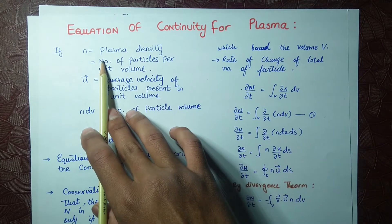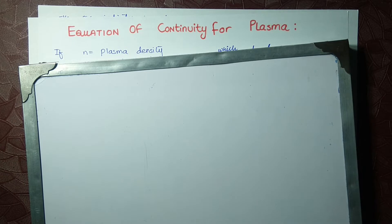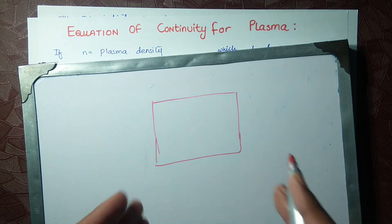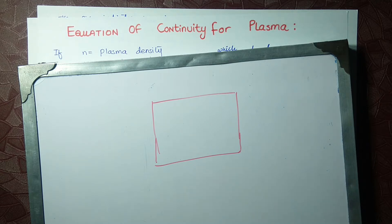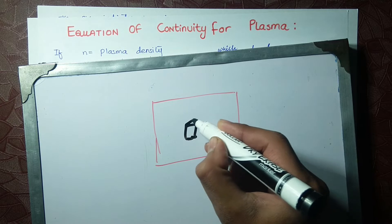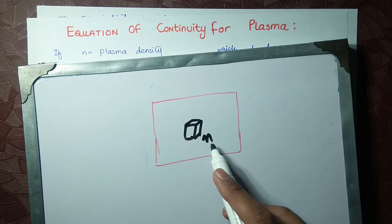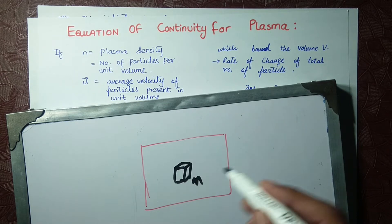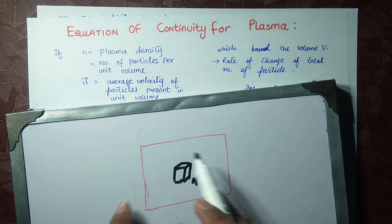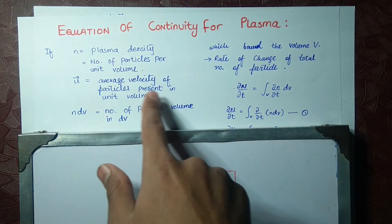Let n equal the plasma density. We have a container and inside this container we have a volume V. Inside this volume V we have n number of particles — n is the plasma density, or number of particles per unit volume. The variable u is the average velocity of a particle present in a unit volume.